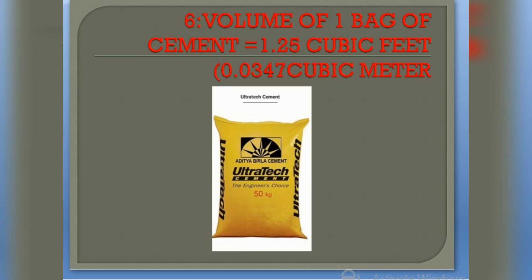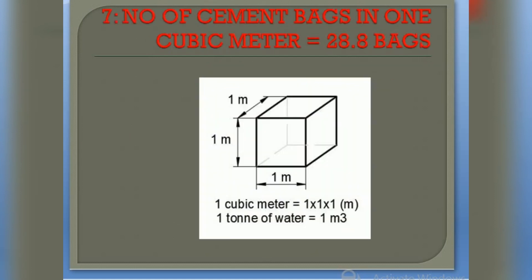The next point is the volume of one bag of cement, which is equal to 1.25 cubic feet. In cubic meters, it is 0.0347 cubic meters. So in cubic feet it is 1.25 cubic feet, and in cubic meters it is 0.0347 cubic meters.